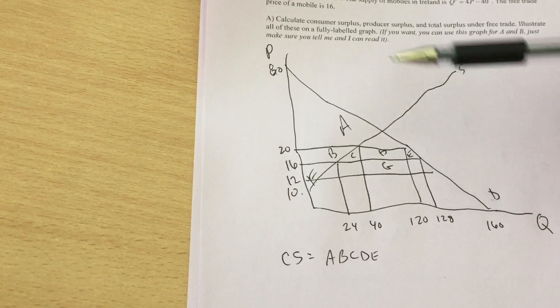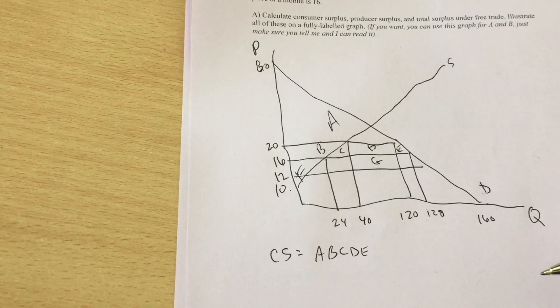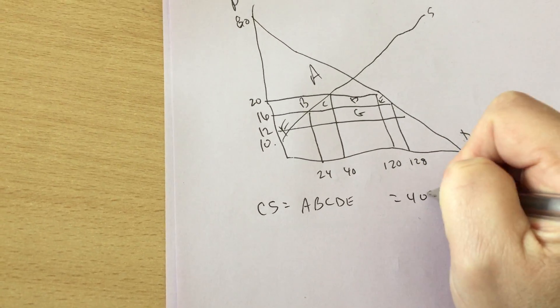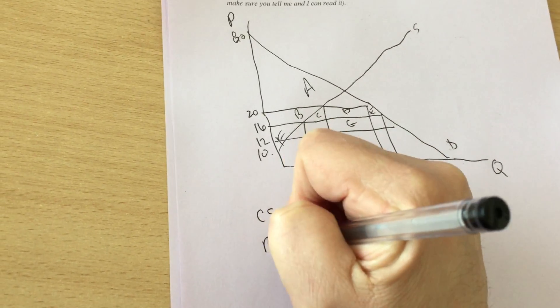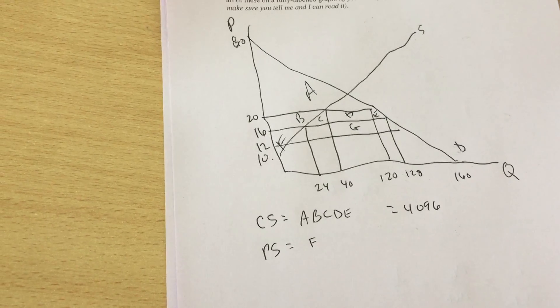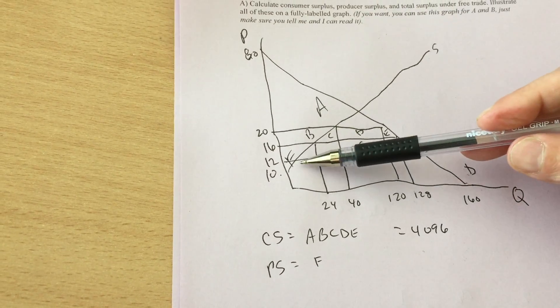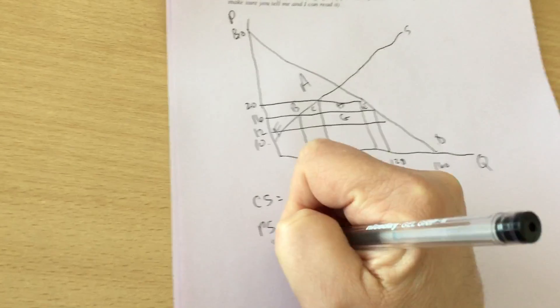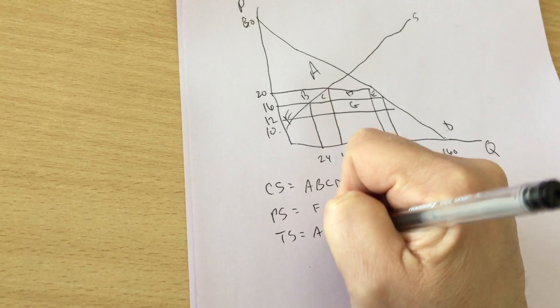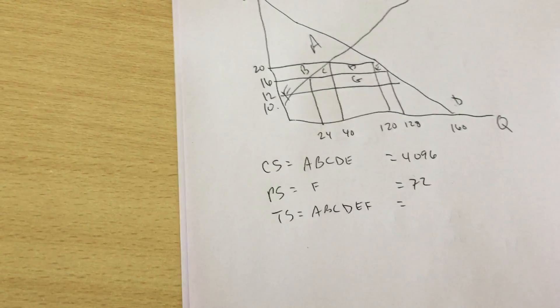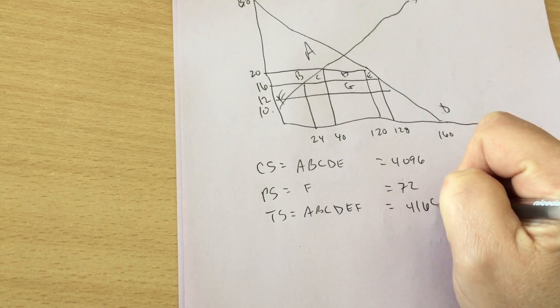So base of 128 times the height of 80 minus 16 divided by 2 gives you a grand total of 4096. Producer surplus is area F, one half of a base of 24 times the height of 10 to 16, 6. So that's a grand total of 72. Total surplus is those two added together which turns out to be 4168.